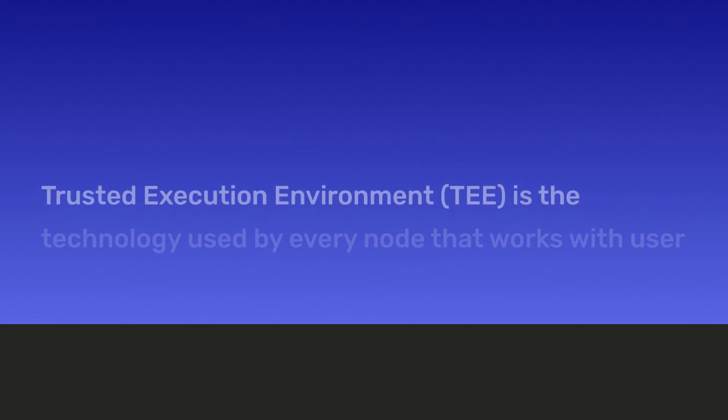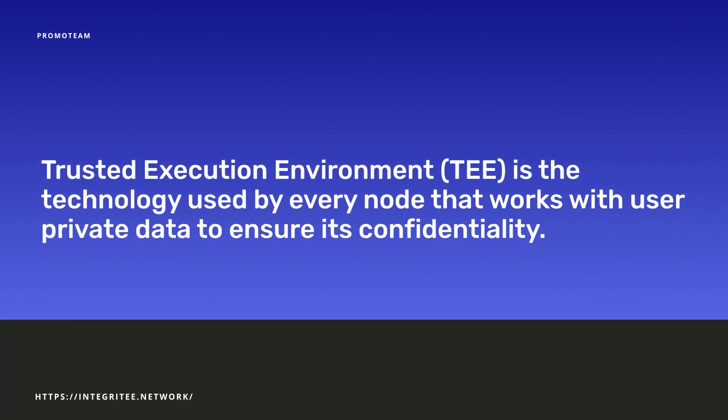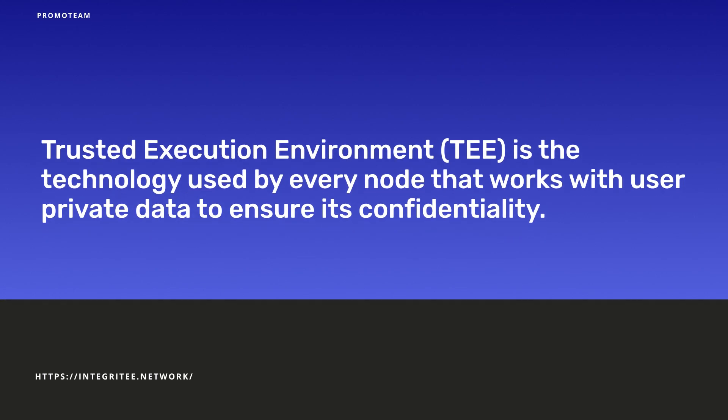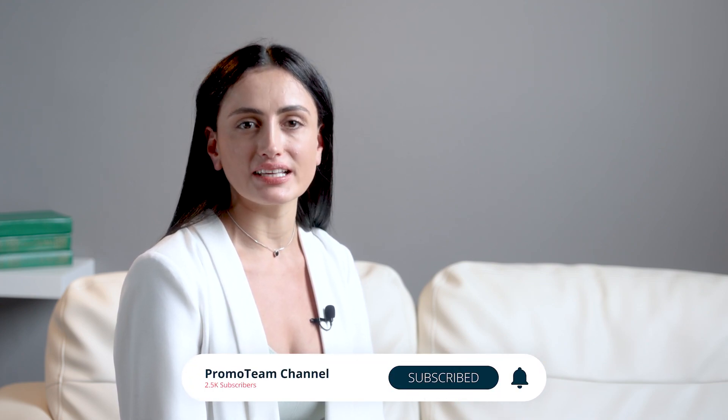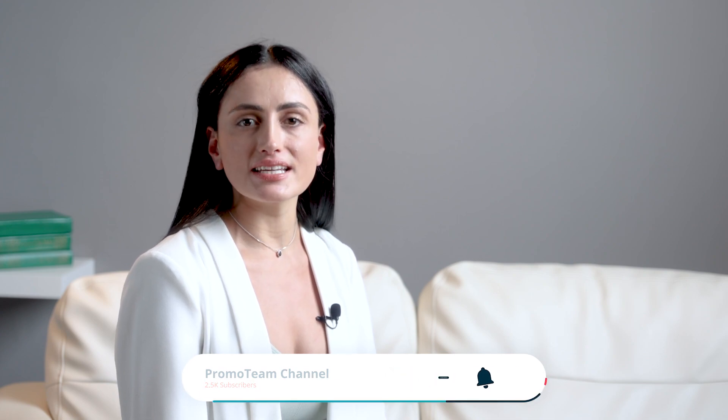The Integrity parachain serves as the registry of the TEE attestations and as the database for storing hashes from Layer 2 nodes. Trusted Execution Environment — TEE is the technology used by every node that works with user private data to ensure its confidentiality. The manufacturer of the processor guarantees by the design of the hardware that nobody has access to the internal keys of the TEE or can read its memory.